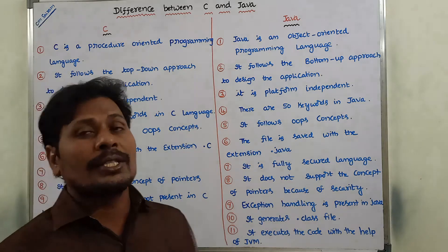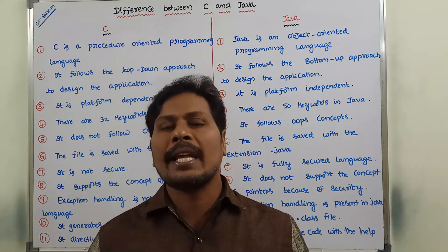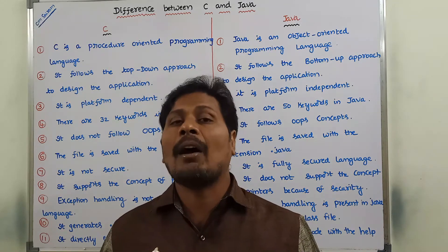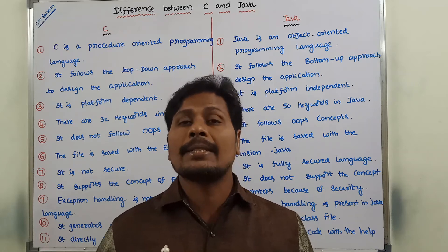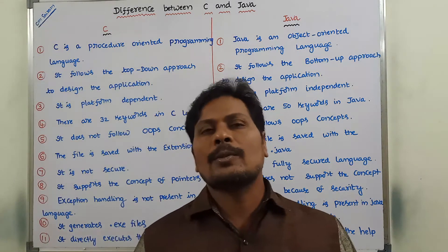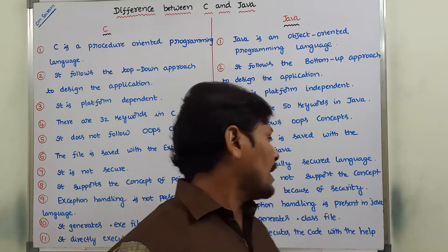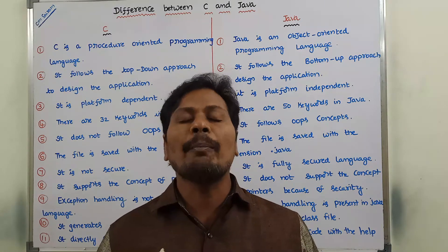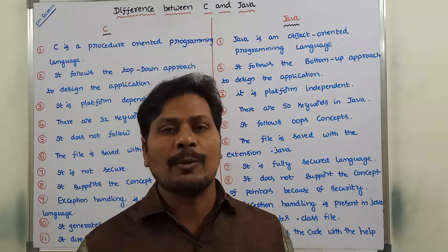Next: C language generates .exe files — that means executable files — after compiling and running the program. C directly executes the code using the Turbo C compiler. Whereas in Java, the code is executed with the help of JVM — Java Virtual Machine. With the help of JVM it directly executes the code.